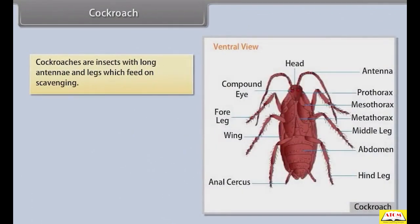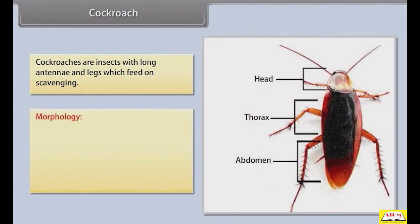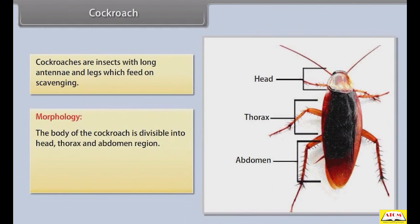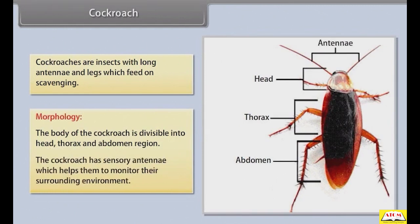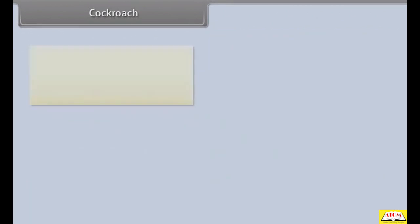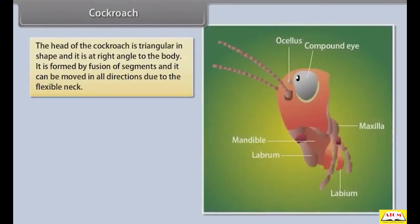Cockroaches are insects with long antennae and legs which feed on scavenging. The body of the cockroach is divisible into head, thorax, and abdomen. The cockroach has sensory antennae which help them to monitor their surrounding environment.